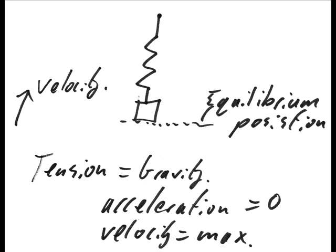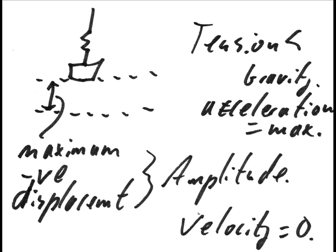The mass experiences the maximum force difference at the maximum displacements and so has the greatest acceleration at these points. The direction of this acceleration changes from positive to negative depending on which maximum displacement it is at. The mass does not accelerate at all when it is at the equilibrium position because the forces on the mass are equal. The acceleration gets bigger as the mass moves away from equilibrium.